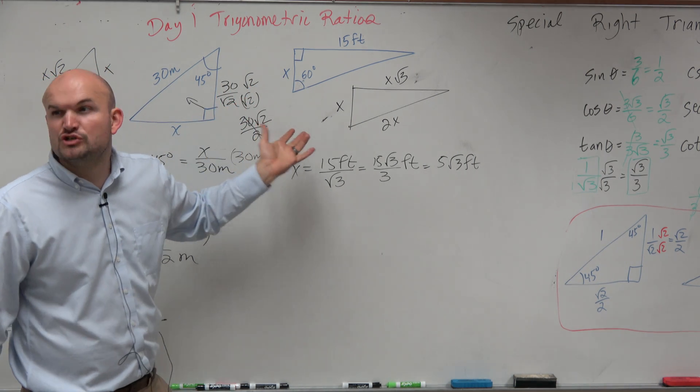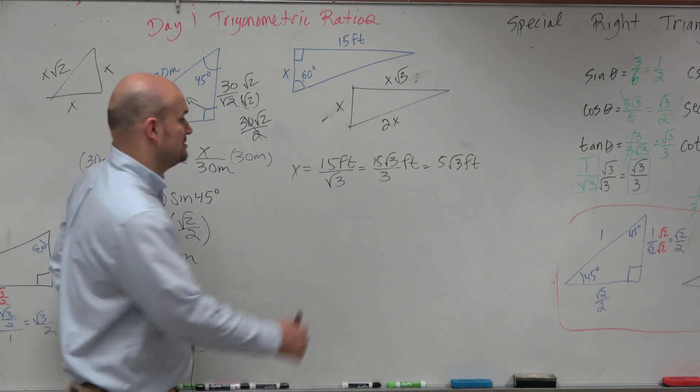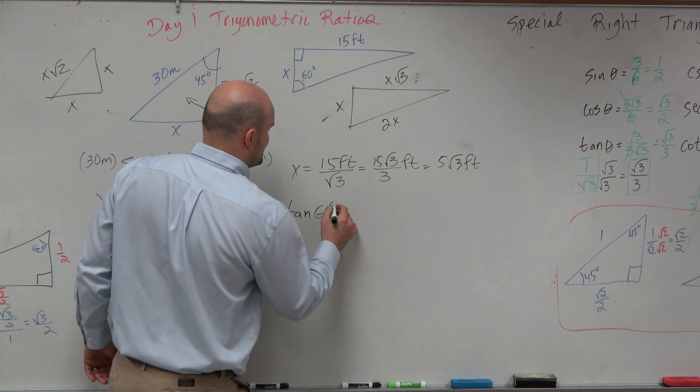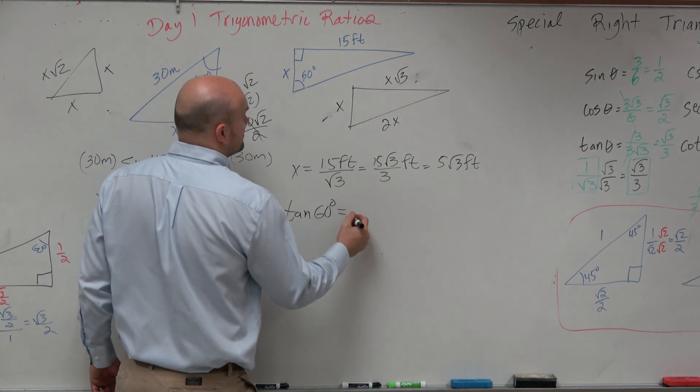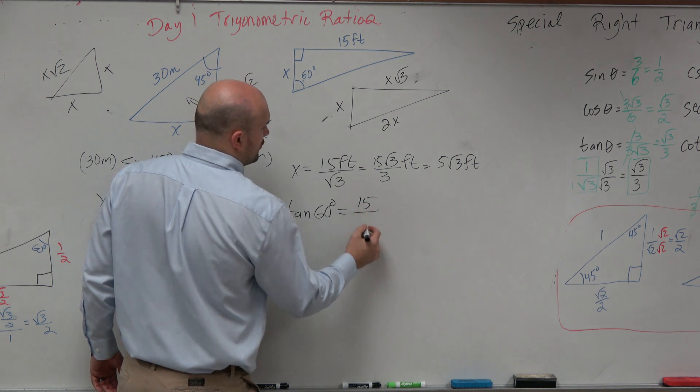And square root of 3. Yeah, but what's trigonometric function? Tangent. Tangent. Tangent. So we could say tangent of 60 degrees equals 15 over x.